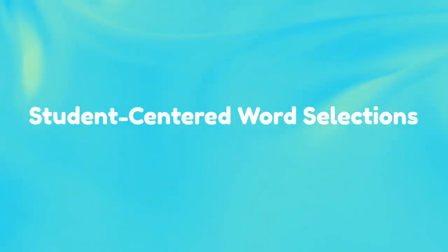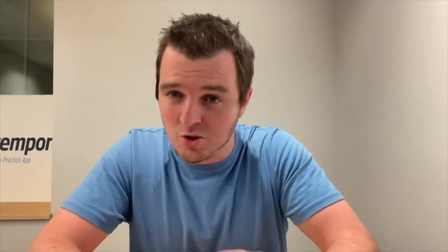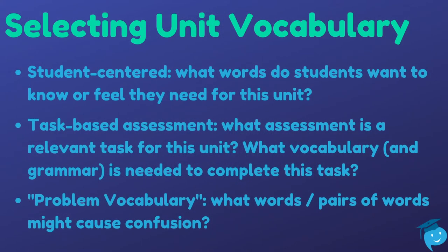Now that we've defined explicit vocabulary, we can talk about selecting unit vocabulary — choosing the words we want to teach. The first consideration is that they are student-centered. If we have a unit on hobbies, food, entertainment, or social media, we want to think about what words our students want to know or feel they need to know. Not everybody likes basketball or knitting — it needs to reflect what the students want to say. Make it student-centered.